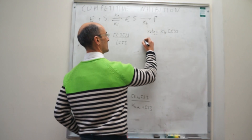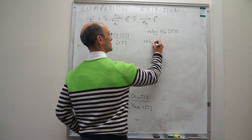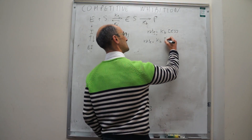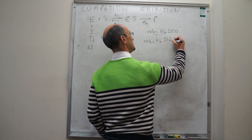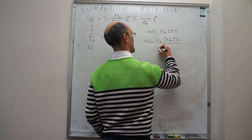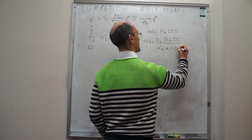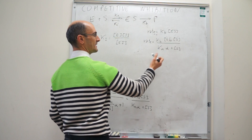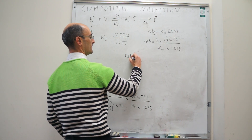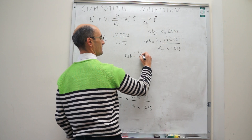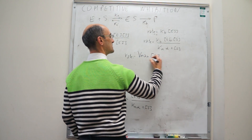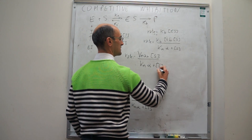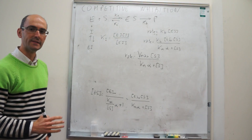The rate is equal to K_B times [ES], which gives: v = K_B·E₀·[S] / (K_M·α + [S]). Recognizing that K_B·E₀ is simply V_max, the final rate law for competitive inhibition is: v = V_max·[S] / (K_M·α + [S]).